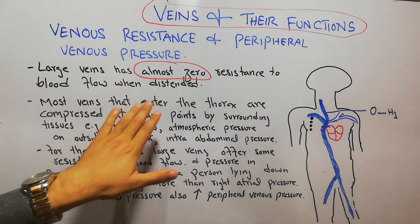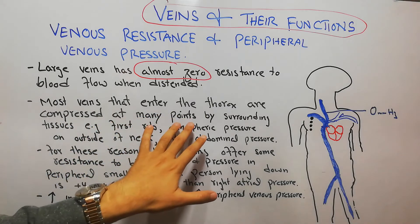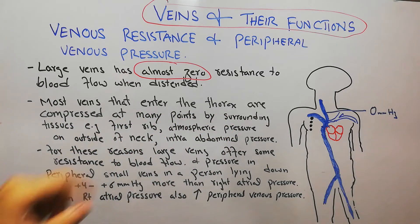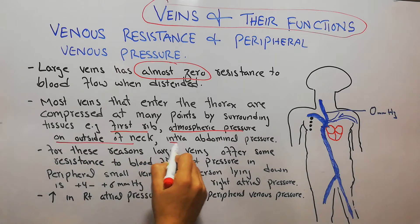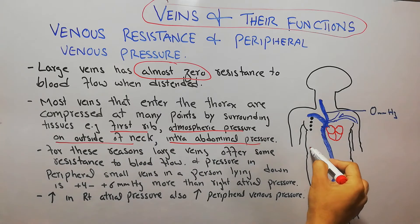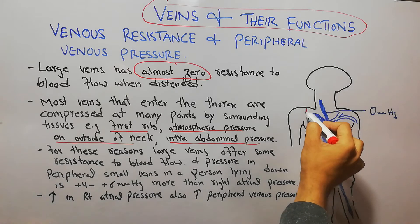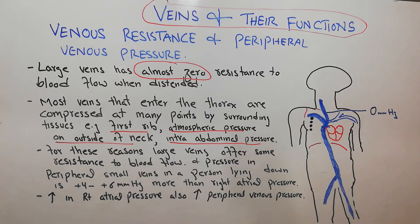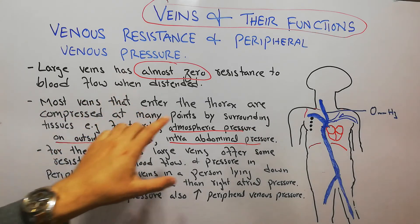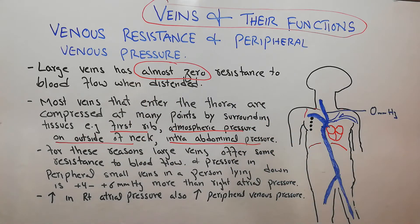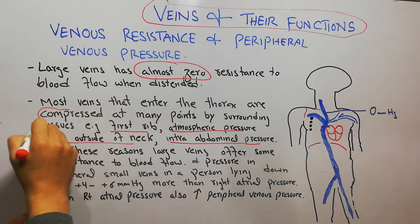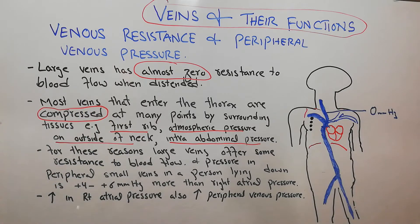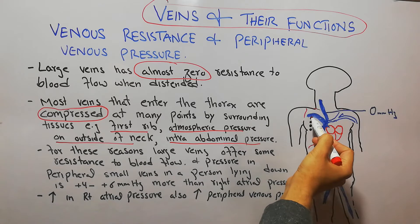However, most veins that enter the thorax are compressed at many points by the surrounding tissues — for example, at the first rib, the atmospheric pressure on the outside of the neck, and intra-abdominal pressure. When a vein passes above the first rib, it gets compressed there.